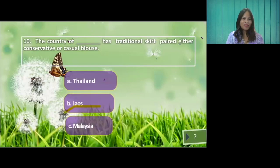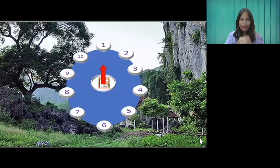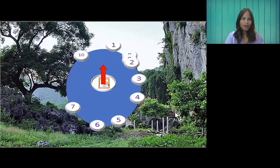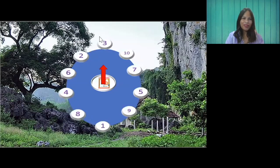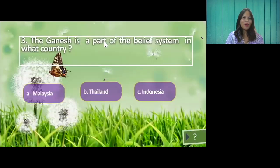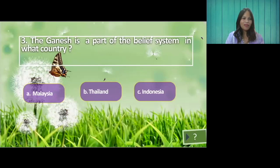Proceed now to the next question and spin again. We have question number three. The Ganesh is a part of the belief system in what country? A. Malaysia. B. Thailand. C. Indonesia. The answer is letter B — Thailand.